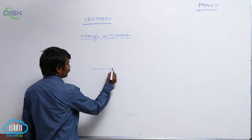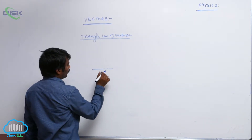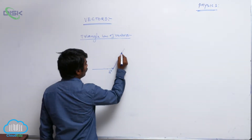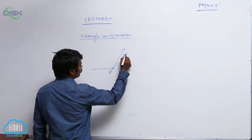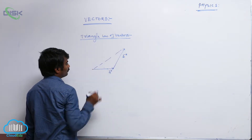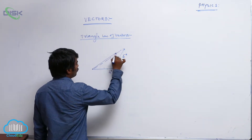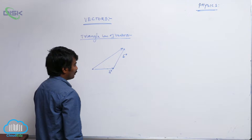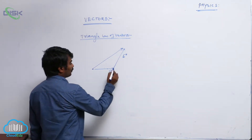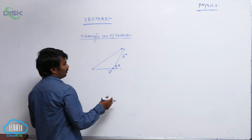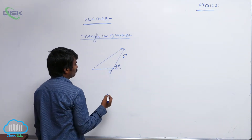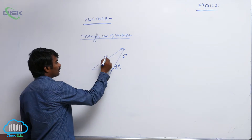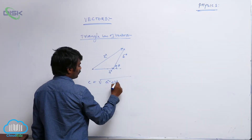Triangle of vectors: if we represent two vectors as the sides of a triangle in order, then the closing side of the triangle is the resultant. The vector opposite to the direction of travel will represent the resultant. Suppose the angle between the two vectors is theta; we have to calculate the resultant value. So if it is c-bar, then c = √(a² + b² + 2ab cosθ).